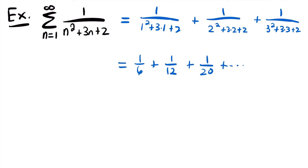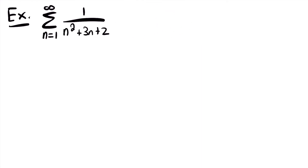However, this is actually a telescoping series in disguise. What we can do is break up this rational expression into two rational expressions by using partial fraction decomposition. This is a topic covered earlier in calculus for integrating rational expressions. Here it allows us to find the convergence of a series that is a telescoping series. We're going to decompose 1 divided by n squared plus 3n plus 2, starting by factoring the denominator.